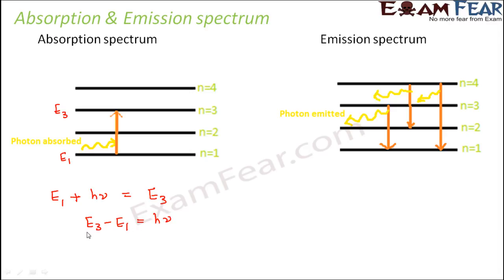More is the difference in the energies of the two levels, more is the frequency of the radiation. If you want to make the electron jump from E1 to E4, the difference between E1 and E4 is greater, so the photon's frequency must be more. More is the difference, more is the frequency of the photon and less is the wavelength, because frequency and wavelength are inversely related.